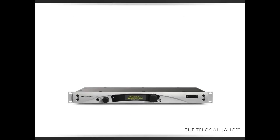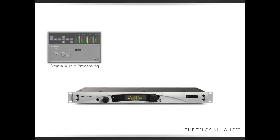We'll start with the ProStream and let's look at what's inside of it. First of all, your audio comes in either through XLR or a LiveWire connection. The first thing it gets to is the Omnia audio processing that's built in. You can use this processing — and you really want to — though you could bypass it if you have some external processing.